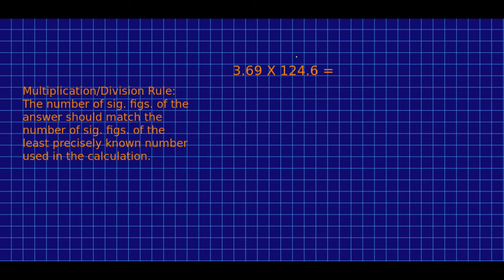You've likely seen the rules for propagation of sig figs in some other course, but I find many students are a little confused by them. So let's just go over them. Multiplication and division rule is that the number of sig figs of the answer, when you multiply or divide, should match the number of sig figs of the least precisely known number used in the calculation. The key phrase here is least precisely known. What does that mean? That means the number with the fewest sig figs.